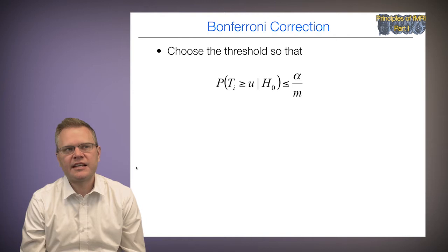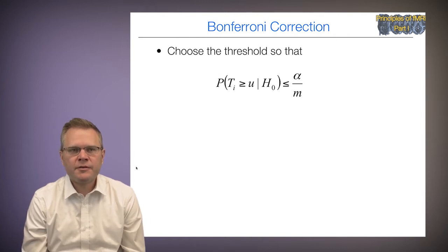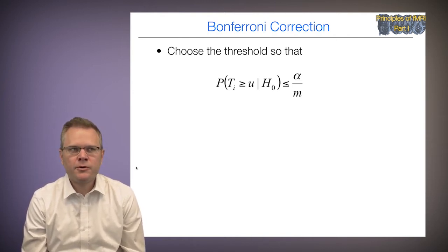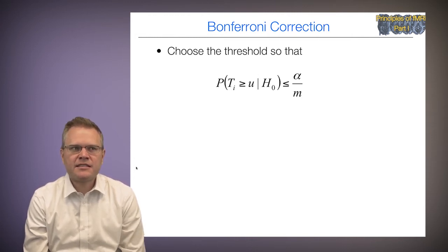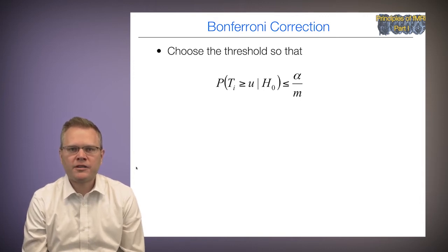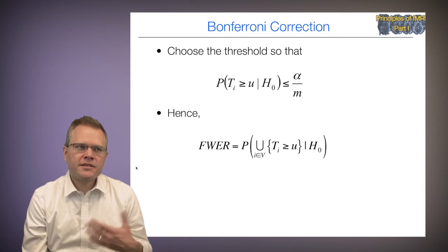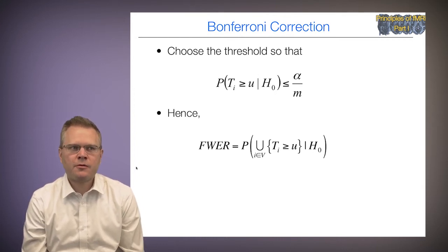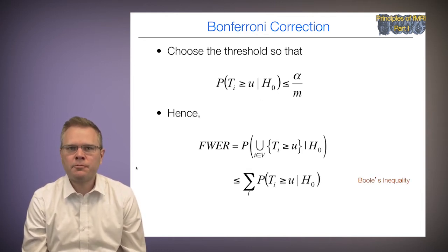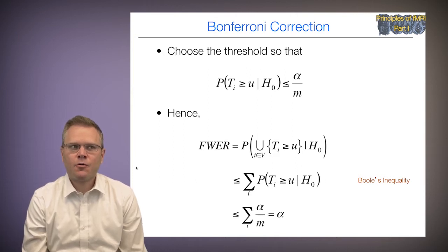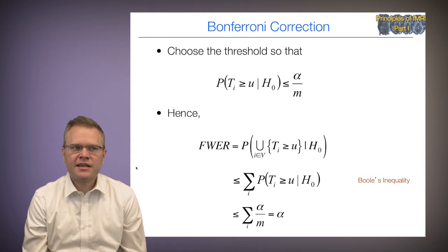The Bonferroni correction is the classic way of doing that. We choose threshold u so that the probability that any test statistic is above u is less than alpha over M, where M is the total number of voxels. This controls the family-wise error rate because, by Boole's inequality, the probability that any statistic exceeds u is bounded by the sum of individual probabilities, which is controlled by alpha.